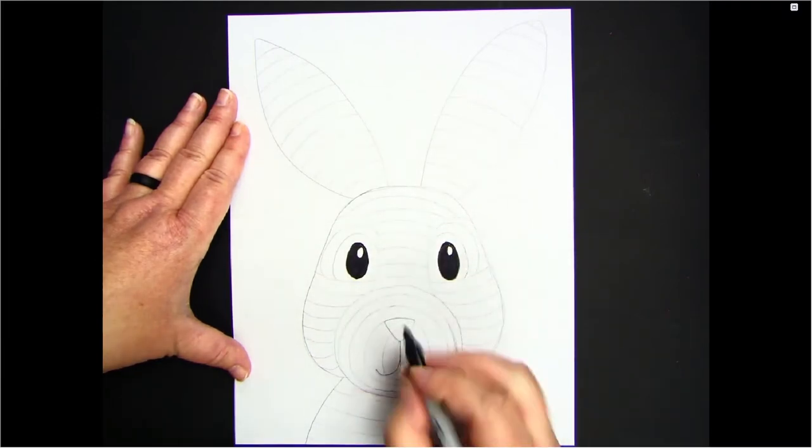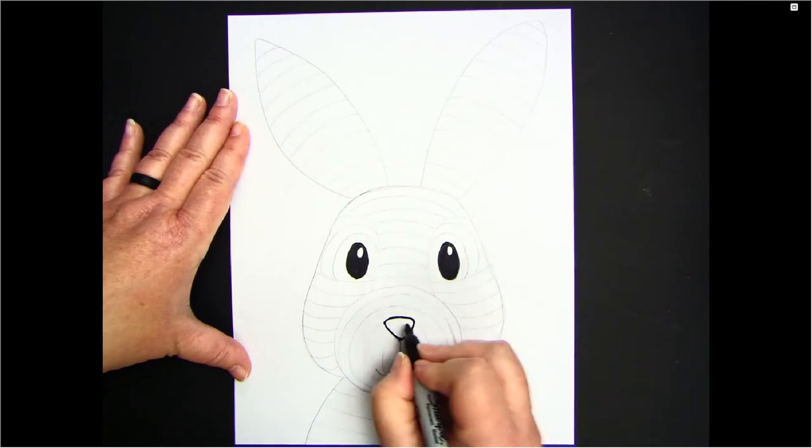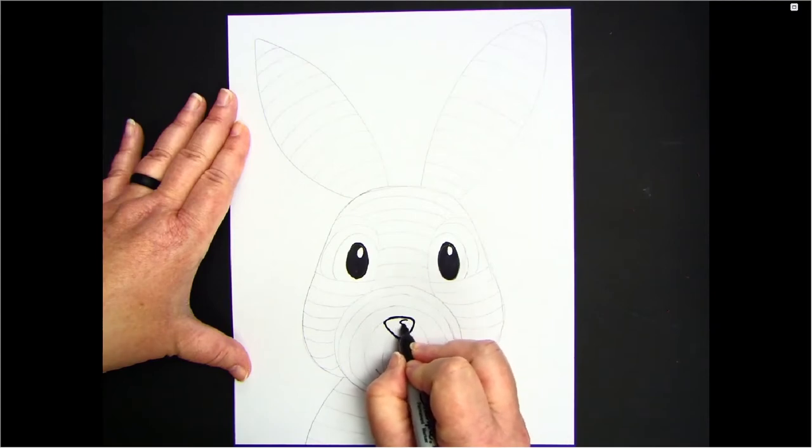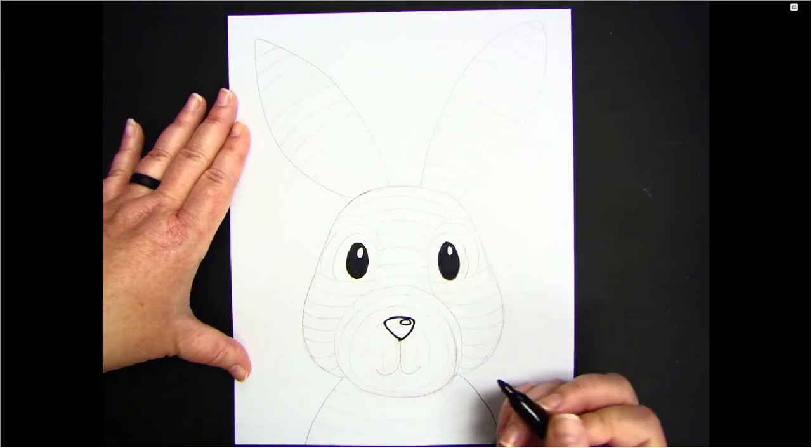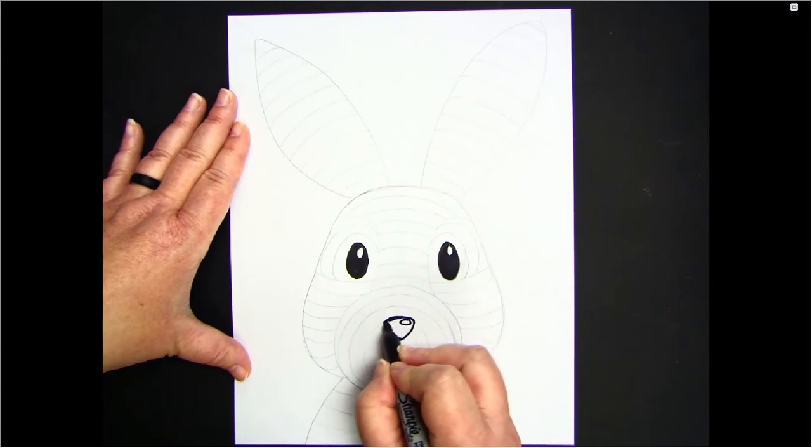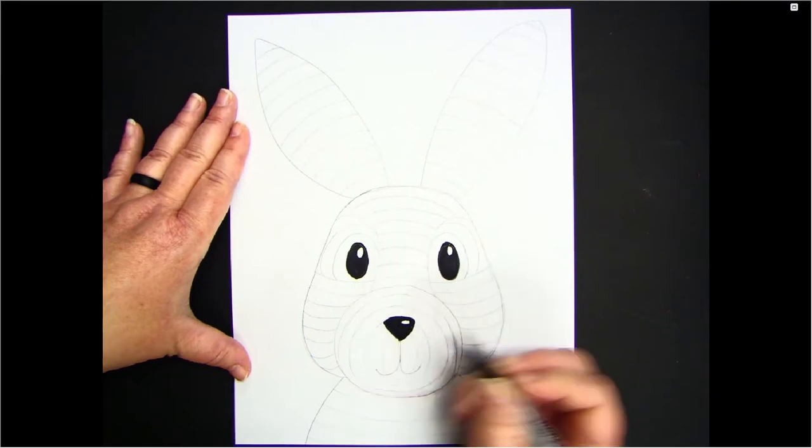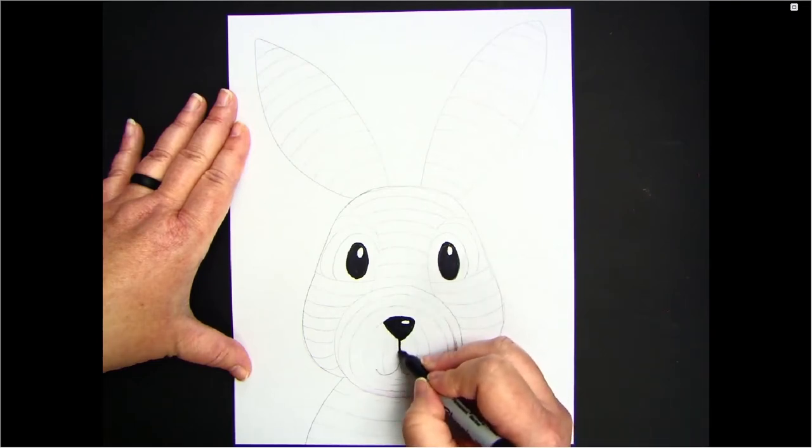I'm also going to do the same for his nose. Outline it and draw that little highlight because his nose would be three-dimensional and it would be wet, so I'm going to make sure that shows that little highlight, that little glare that would be on it. Then I'll fill that in around the highlight. And I'll go ahead and trace his mouth.